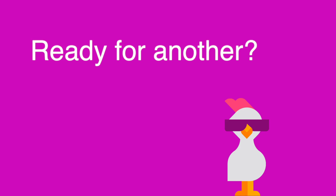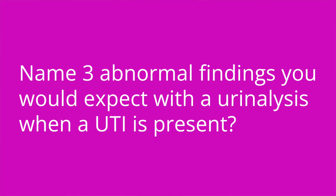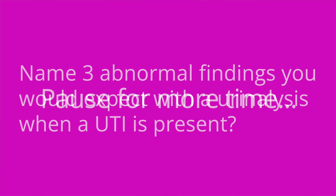Question number three: name three abnormal findings you would expect with a urinalysis when a UTI is present. The answer is the urine will be positive for bacteria, white blood cells, leukocyte esterase, and nitrites — and possibly blood as well.